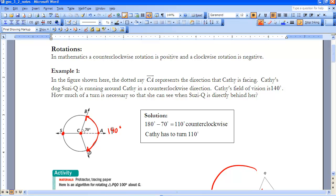So we notice that Cathy can turn not too far, and she will see Susie Q. But let's take a look at this in a mathematical way.